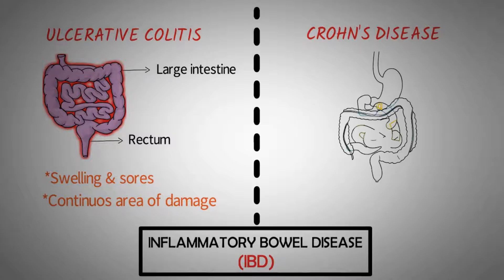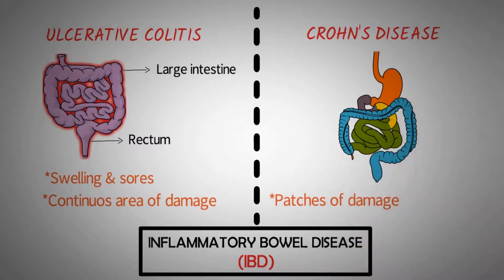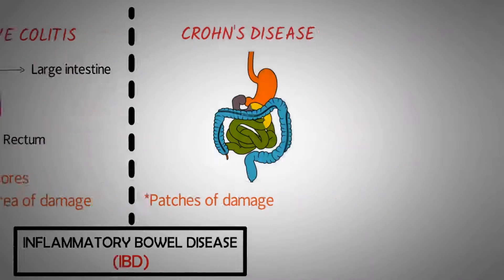Crohn's disease can affect any part of the digestive system from the mouth to the anus. Inflammation in Crohn's disease often happens in patches on digestive organs such as the stomach or intestines. With Crohn's, there is normal tissue next to an inflamed area, or patches of damage.